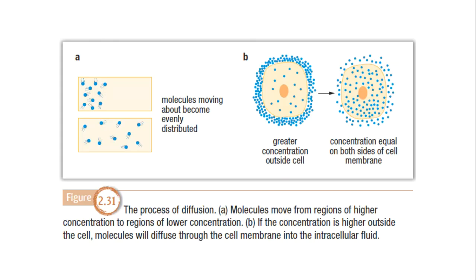Here on the left side, diagram A, we can see how the molecules were concentrated in one section, so between the left and the right there was a high concentration gradient. Over time they've diffused and become evenly distributed, so there is no longer a gradient. On the right side, we can see that if the concentration outside the cell is greater, molecules will move in to balance that difference in concentration.